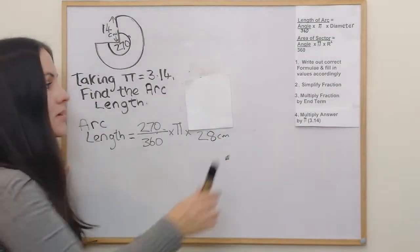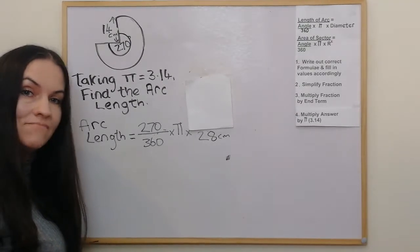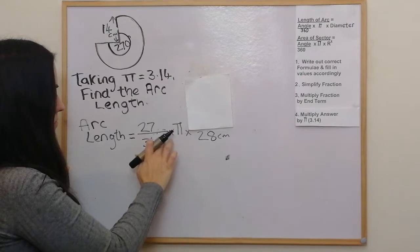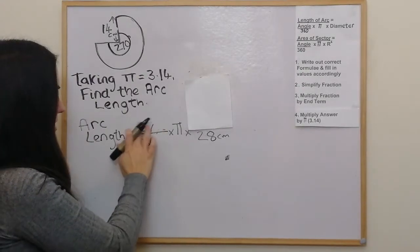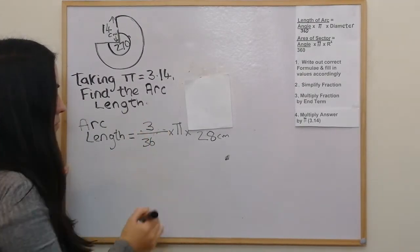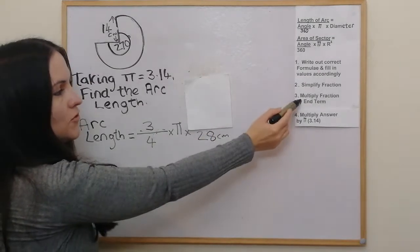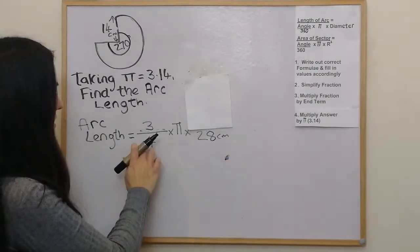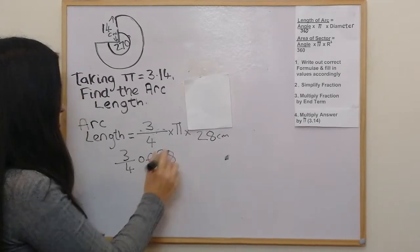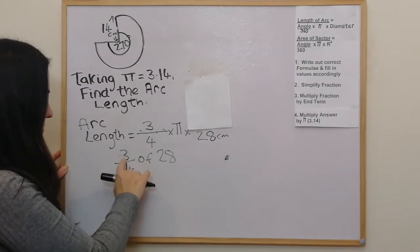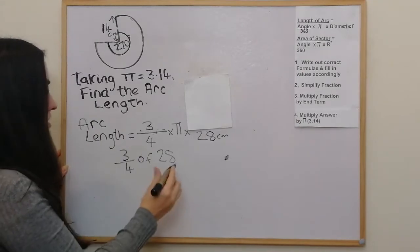The second step is to simplify the fraction 270 over 360. First divide both by 10, removing the trailing zeros. Then 27 and 36 are both in the 9 times table, so divide the top by 9 to get 3 and the bottom by 9 to get 4. The third step is to multiply the fraction by the end term — we're finding 3 quarters of 28. Divide 28 by 4 to get 7, then times by 3, giving 21.